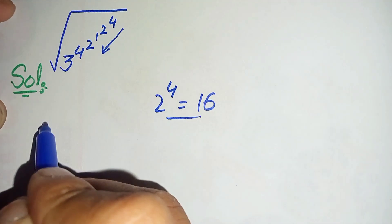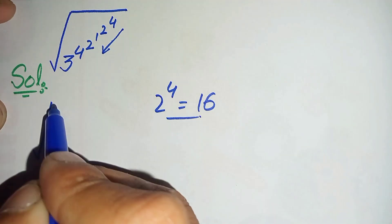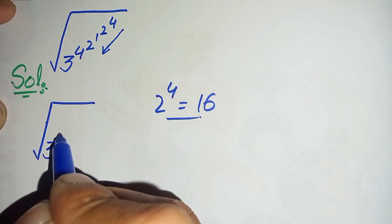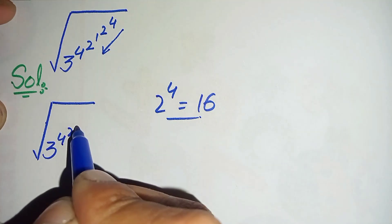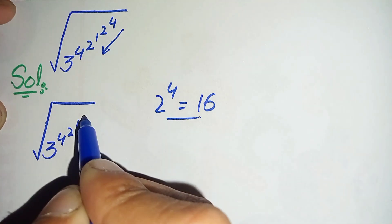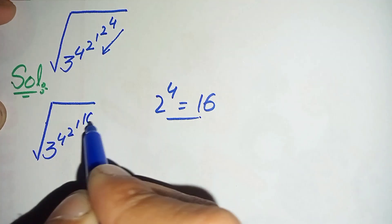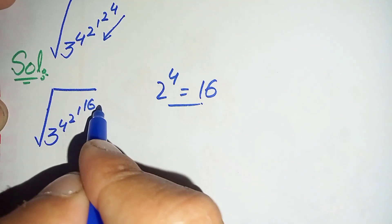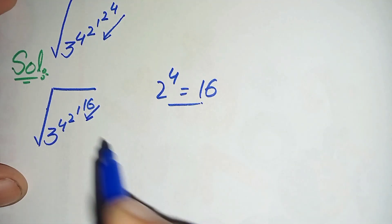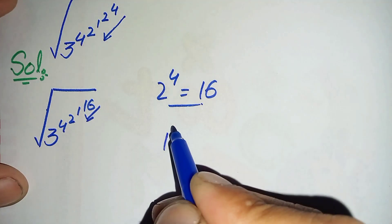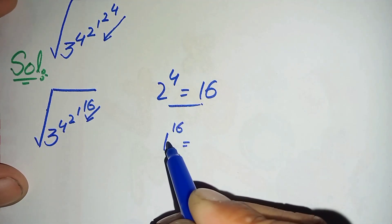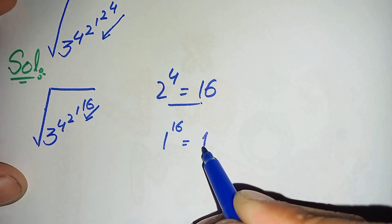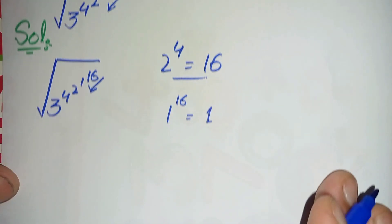So this will become the square root of 3 raised to power 4, raised to power 2, raised to power 1, raised to power 16. Now we will solve 1 raised to power 16. 1 raised to power 16 is very simple because multiplying 1 any number of times is simply 1, so 1 raised to power 16 is 1.